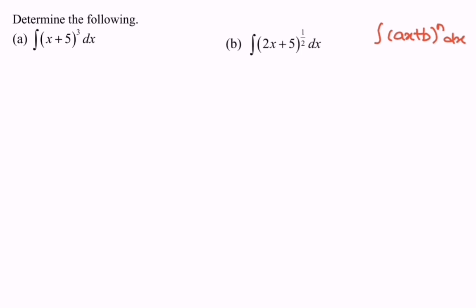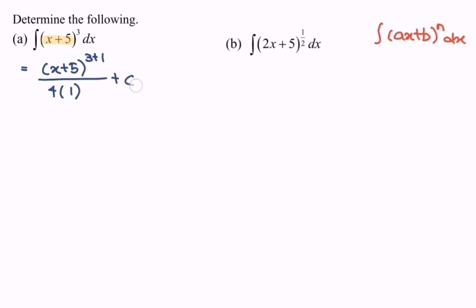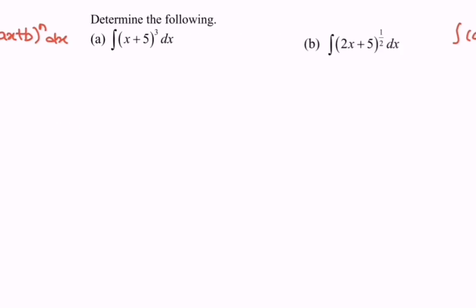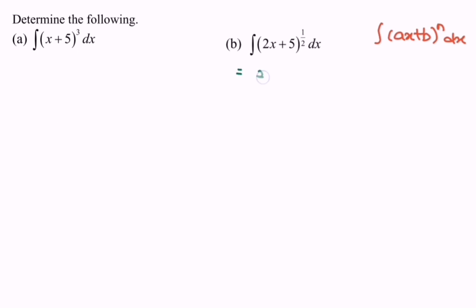Here we have (x + 5) to the power of 3 + 1, over 4. Do remember to differentiate the internal function, and we obtain 1, multiplied by 1, plus c. So here we have (x + 5) to the power of 4 over 4, plus c.